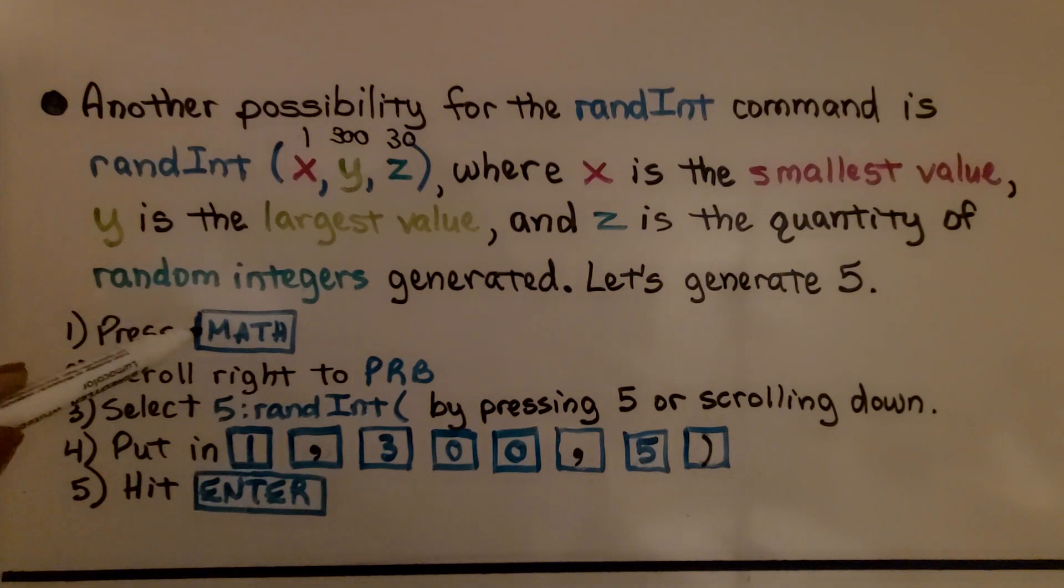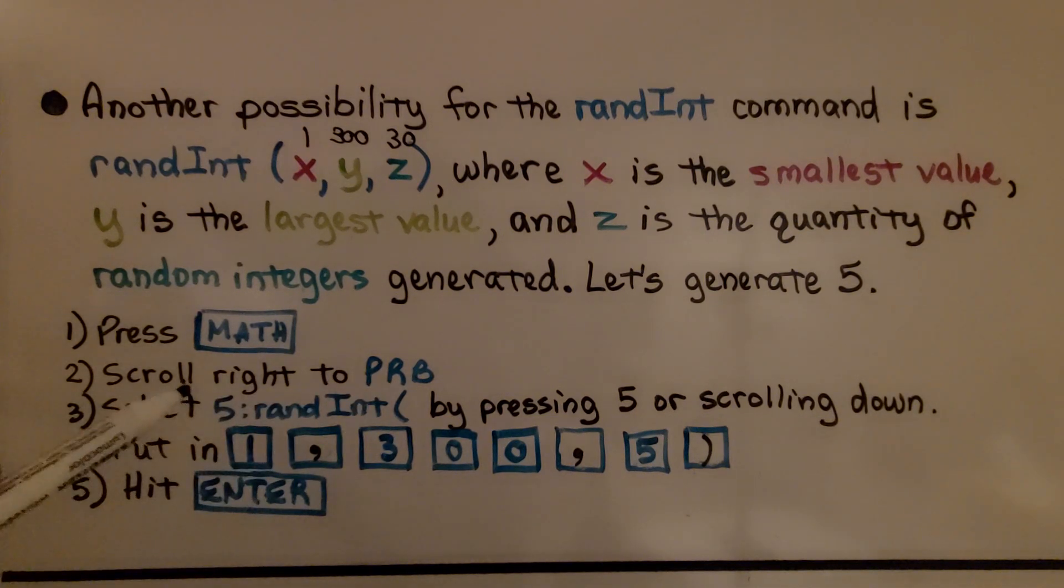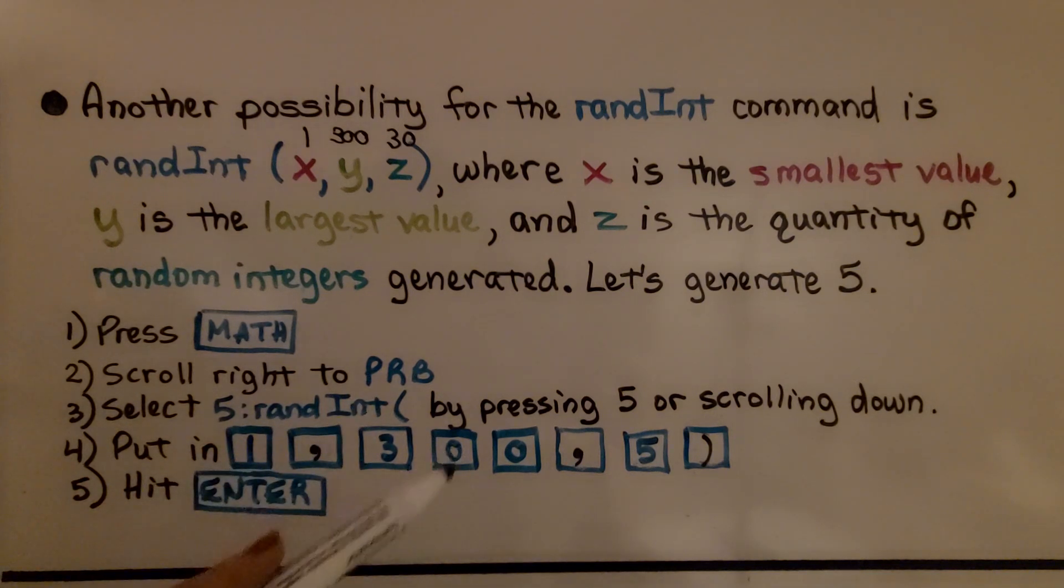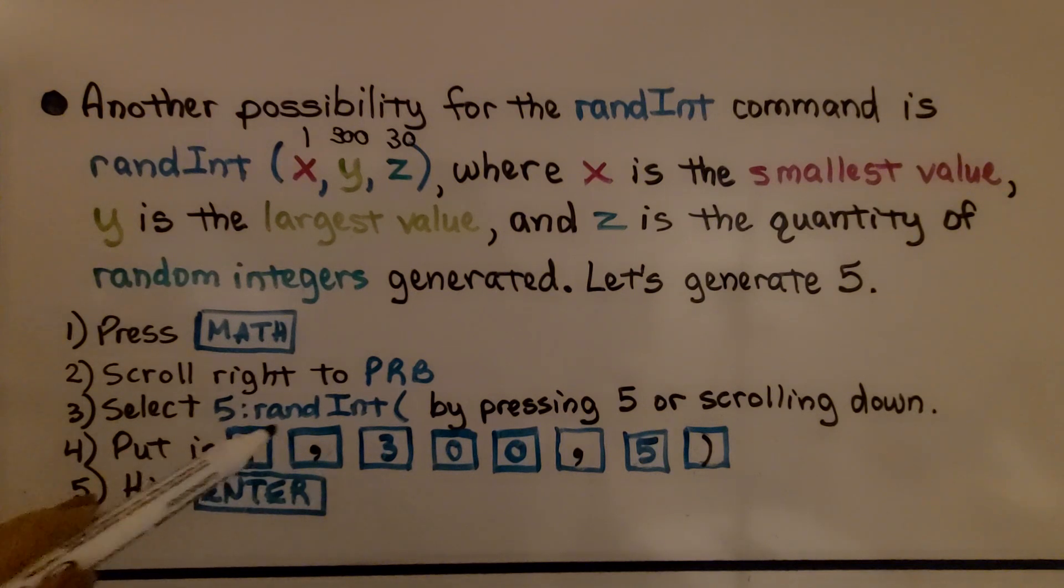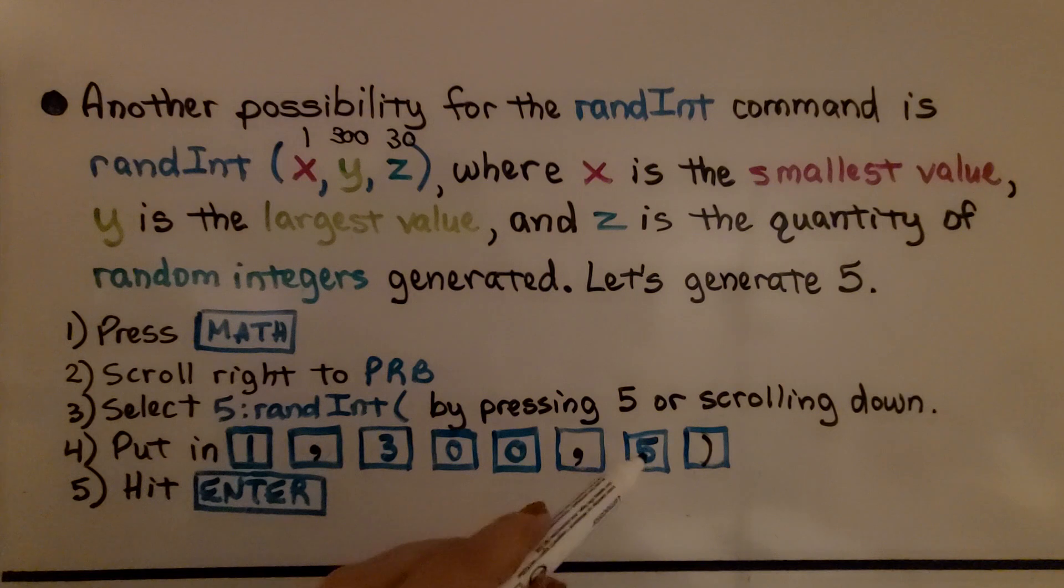We press Math like we did before. We scroll to the right to the PRB. We select 5 for the ran int open parentheses by pressing 5 or scrolling down. And then we key in, we put in 1, 300,